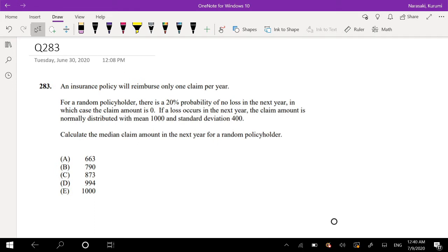Okay, assuming that you already tried it, let's just dive right in. An insurance policy will reimburse one claim per year. For a random policyholder, there is a 20% probability of no loss in the year. So 20% probability of no loss.